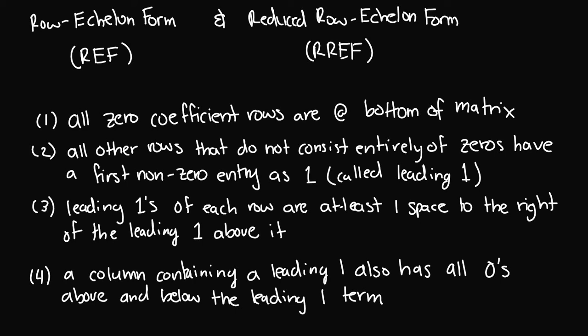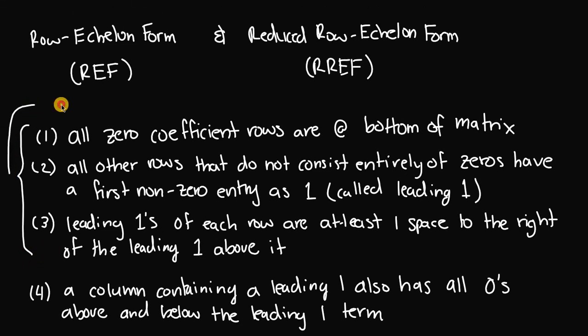In this video, I want to look at different matrices and talk about row echelon form and reduced row echelon form. We have certain rules that each matrix has to follow in order to be in either form. There are four rules, and the first three guarantee that if the matrix meets all three rules, it is in what we call row echelon form.